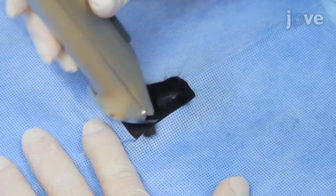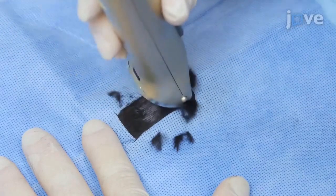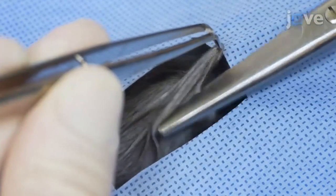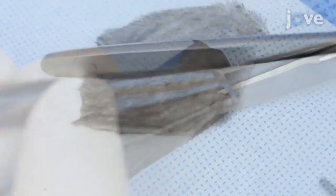To begin this procedure, remove the mouse's hair with an animal hair trimmer. Make an incision on the skin of the back using scissors. Then lift the skin up and cut it away.